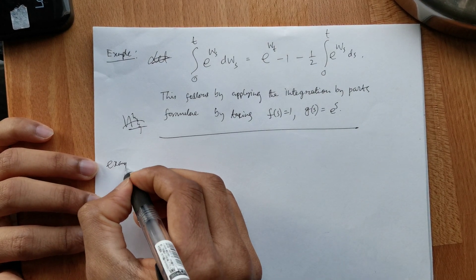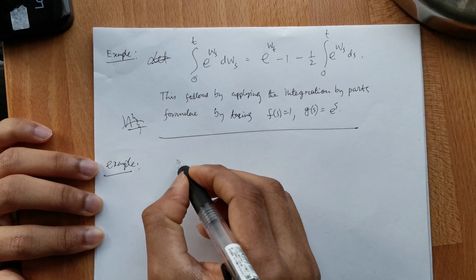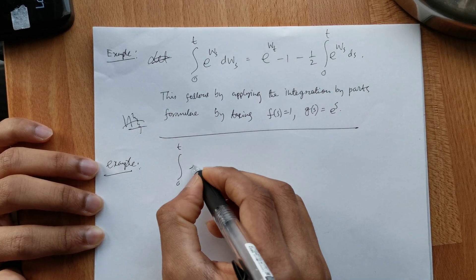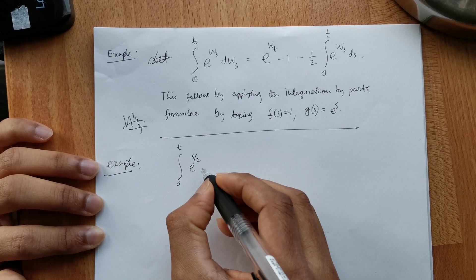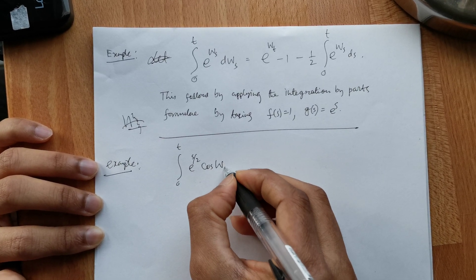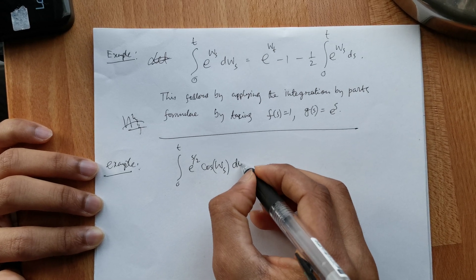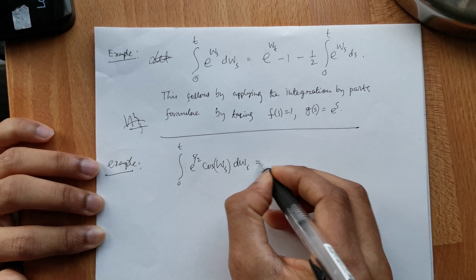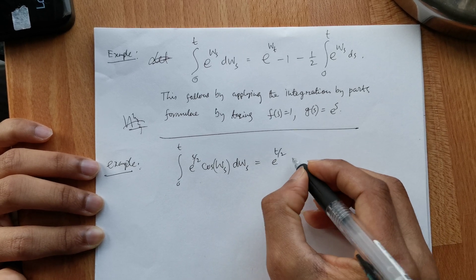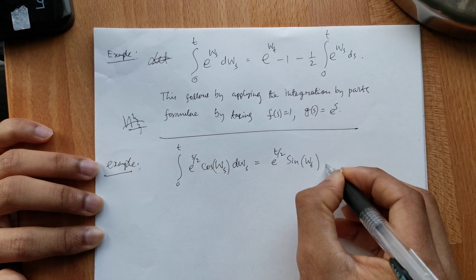So, the integral from 0 to t of e^(W_s/2) cos(W_s) dW_s equals e^(t/2) sin(W_t).